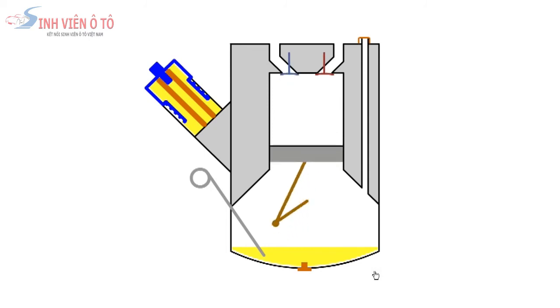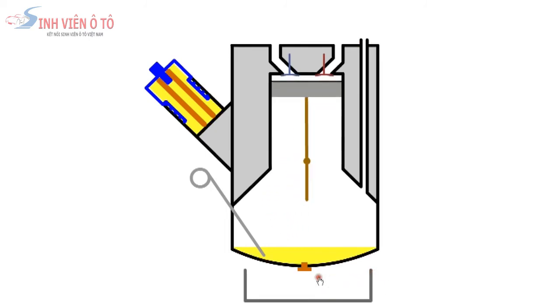Before changing oil, we run the engine for a short period to warm the oil. A container is placed under the sump, the filler cap is removed and we open the drain plug. While the oil is draining, the oil filter is replaced.